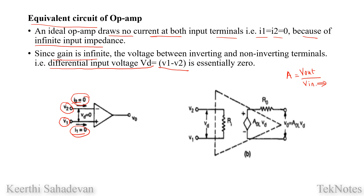This will be an amplifier and we have Vd. The equation is Vout divided by Vd. The gain is infinite. The voltage between the inverting and non-inverting terminals is, ideally, zero. In the ideal case: I1 is zero, I2 is zero, and input resistance is infinite.